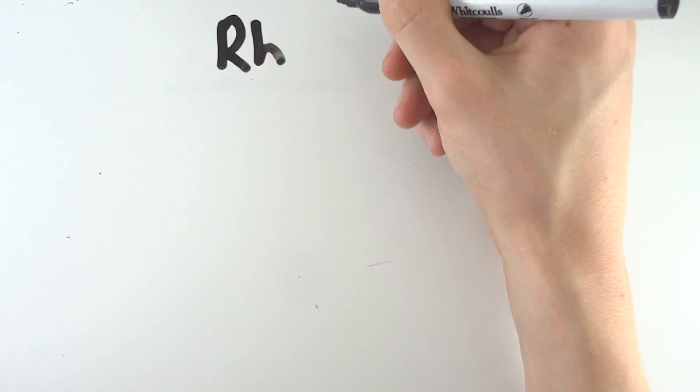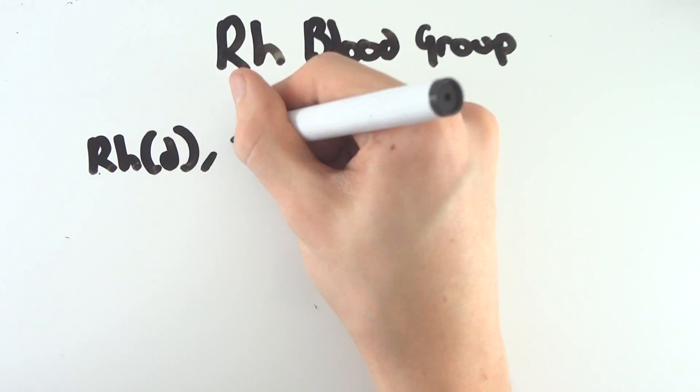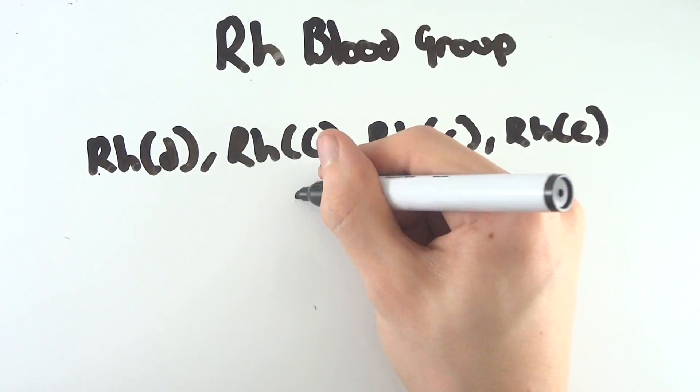You then have the second most significant blood group system, which is the Rh blood group system which contains about 50 antigens.